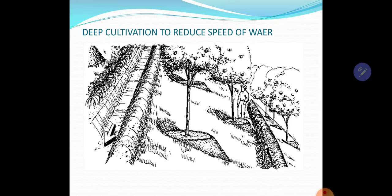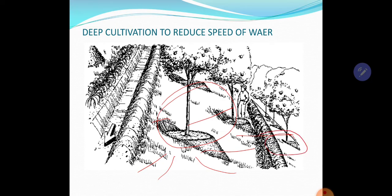Then deep cultivation — here the contour method is used, but trees are also grown at some distance. These trees must be planted so that their roots hold the ground, and again at some distance another tree is there. These trees help in holding the ground, and this contour-style plantation moves water very slowly, so soil erosion on slope regions will not occur.